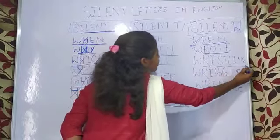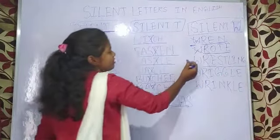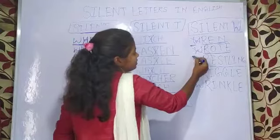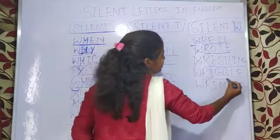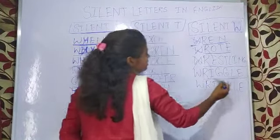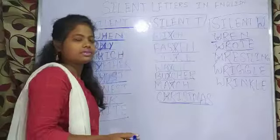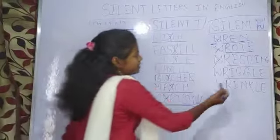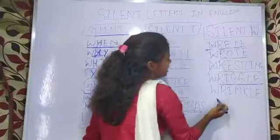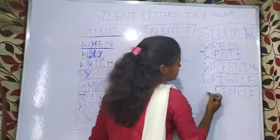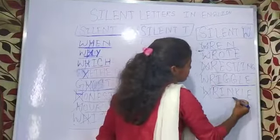Next is 'wrestling' — you will not read the W. Next is 'wriggle' — this is 'wriggle.' And this is 'wrinkle' — you will not read the W. This is 'wrinkle.' Thank you.